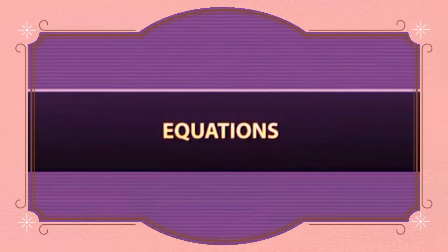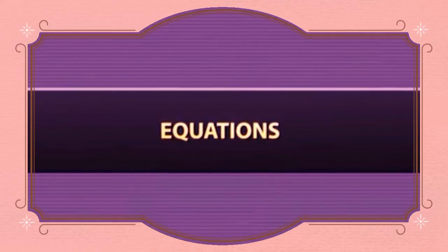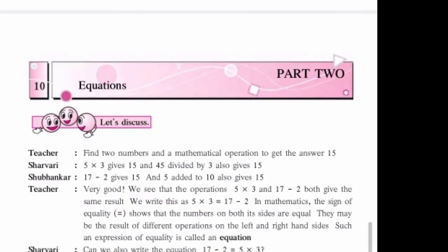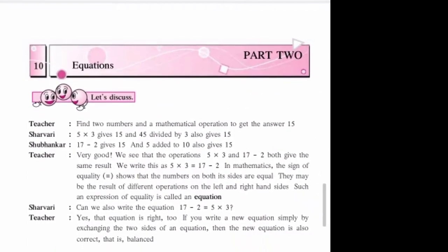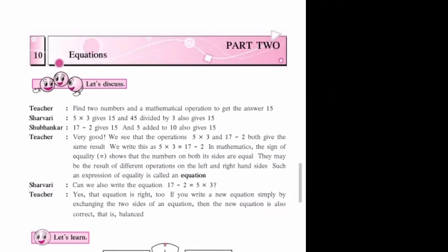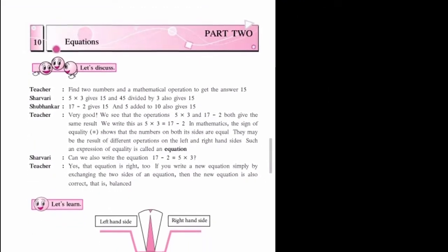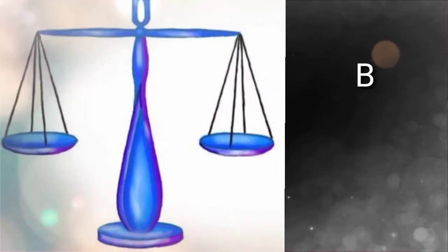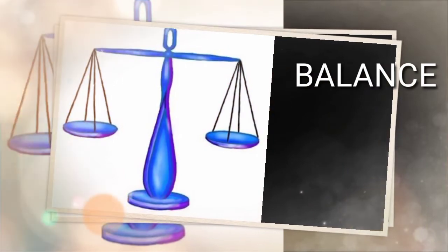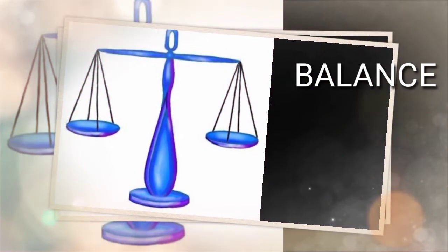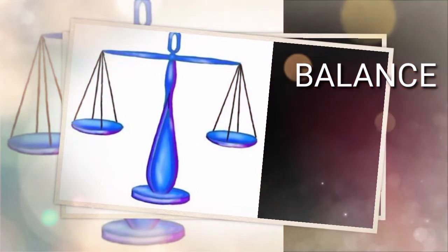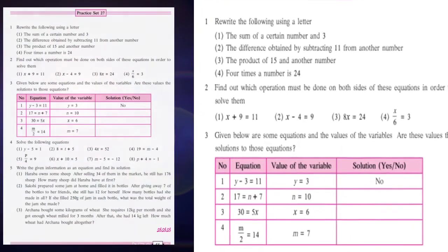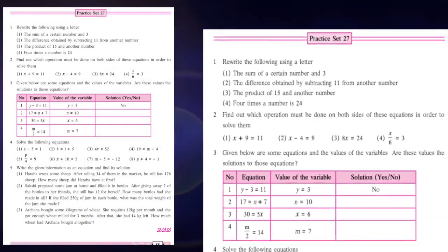When any of the following operations are carried out on an equation, the equation remains balanced. That means left hand side and right hand side, both sides must be balanced. For that, we are doing: interchanging both the sides, adding the same number to both the sides, subtracting the same number from both the sides, multiplying both the sides by the same number, dividing both the sides by the same non-zero number. So let us start Practice Set Number 27.